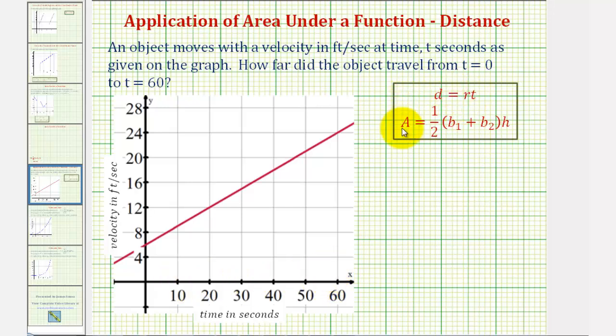And since we know distance equals rate times time, where for our graph we have the rate along the y-axis and the time along the horizontal axis, if we find the area under the curve above the horizontal axis between t equals zero and t equals sixty, we can determine the distance traveled over this time.